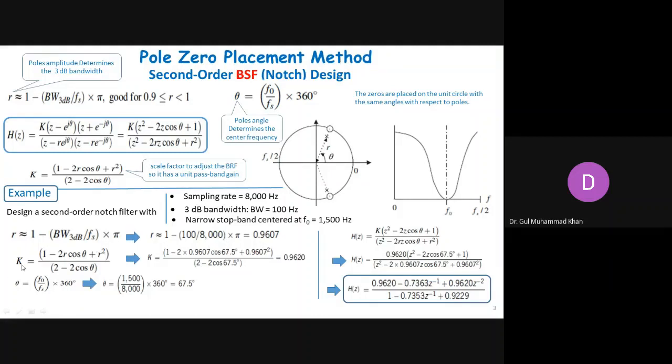Similarly, by substituting value into this second expression, we can calculate the value of K as well. That is 1 minus 2R cos theta plus R squared. So, we substitute the values of R and theta into this expression, and similarly to the denominator, we end up with the value of K. In order to calculate the value of theta, we have the value of F0, which in this case is 1500 Hz divided by Fs into 360, and we end up with this value. This value can be easily converted into radians as well, but in this case, it's in degrees.